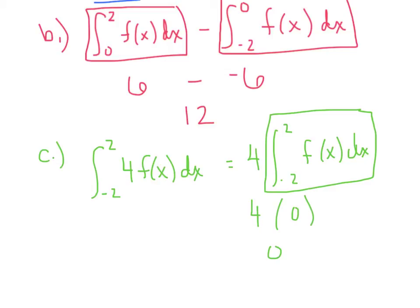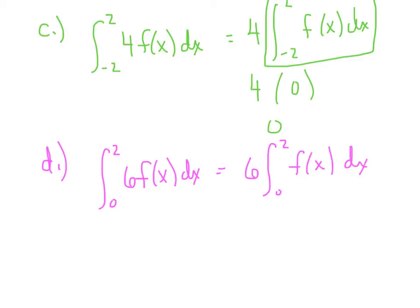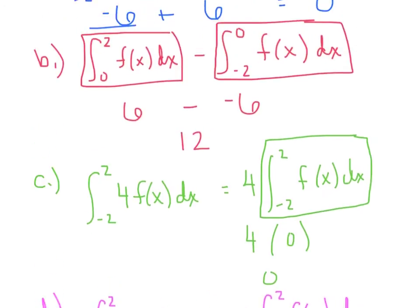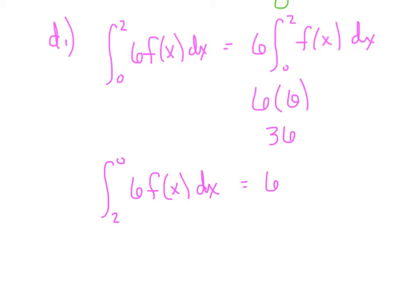Part D: the integral from 0 to 2 of 6 times f(x). Pull the coefficient out — 6 times the integral from 0 to 2. That integral equals 6 itself, so the final answer is 36. Now the bear trap: what if they said from 2 to 0 of 6 f(x)? Exact same problem, but the bounds were switched. You're still allowed to pull the 6 out, but you negate it and switch the bounds to make them 0 to 2. So the final answer this time would be negative 36.